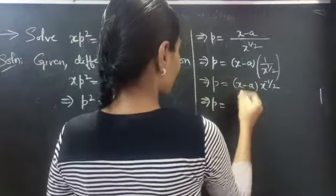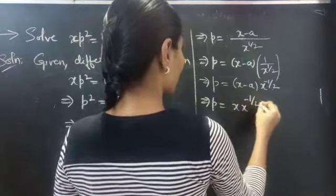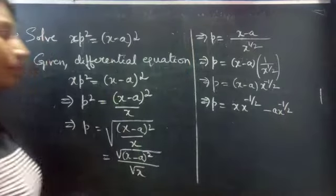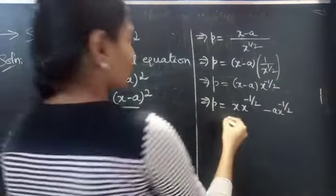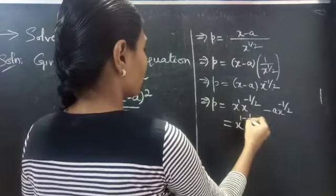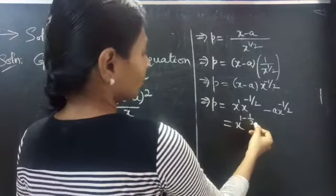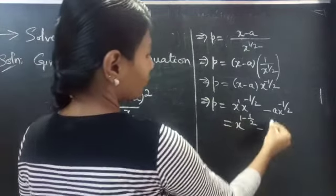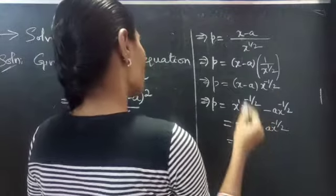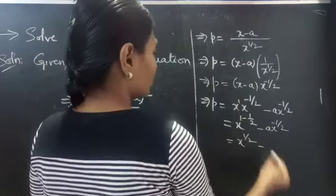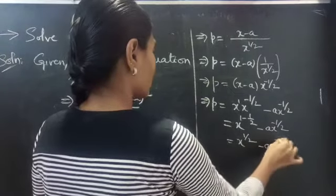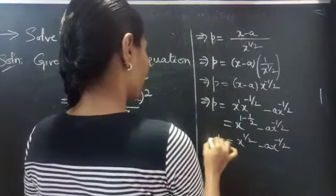Then p equals x into x power minus 1 by 2, minus a into x power minus 1 by 2. Here the bases are equal, so powers must be added. Then x power 1 minus 1 by 2 — that is, 1 minus half is half — so you get x power 1 by 2 minus a into x power minus 1 by 2.